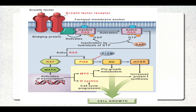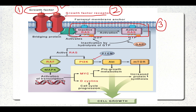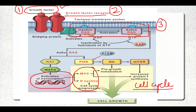At each step of the cell growth pathway, an oncogene can be present. First is the growth factor gene itself. Second is the growth factor receptor. Third are signal transducing proteins such as RAS, a very important oncogene. Fourth is activation of nuclear transcription factors. Lastly, there can be problems in the cell cycle regulators. These oncogenes at various levels get activated and lead to further cell growth.